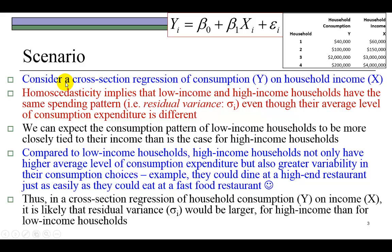Consider a cross-section regression of consumption on household income, where you've taken a sample of households of a given sample size. Homoscedasticity would imply that low-income and high-income households are going to have the same spending pattern — in other words, the same residual variance, or error variance — even though their average level of consumption expenditure is different. As you know, that's going to be a tall order.